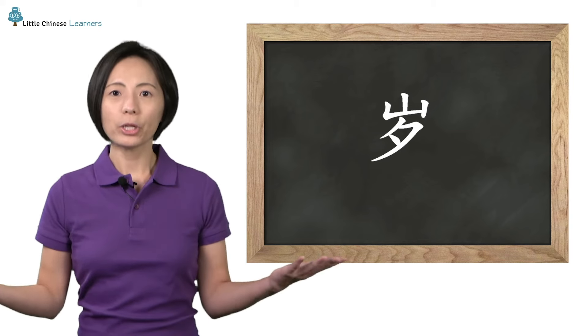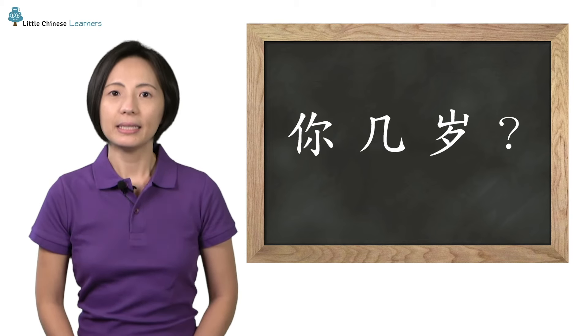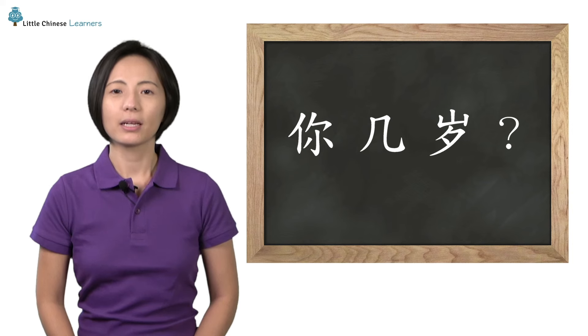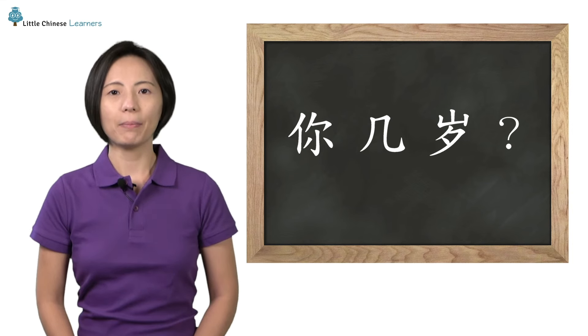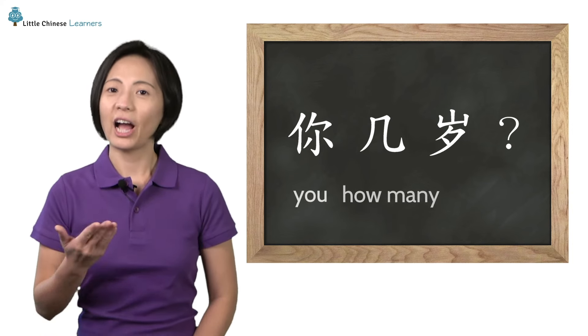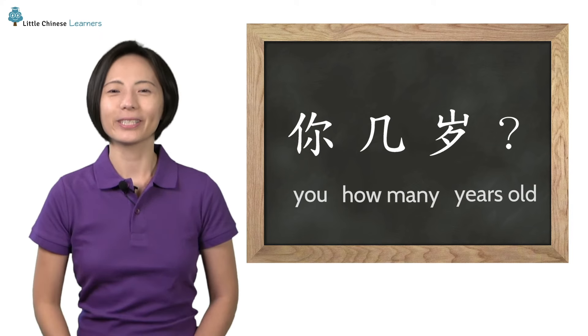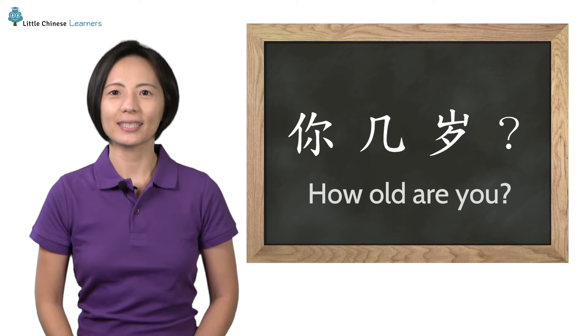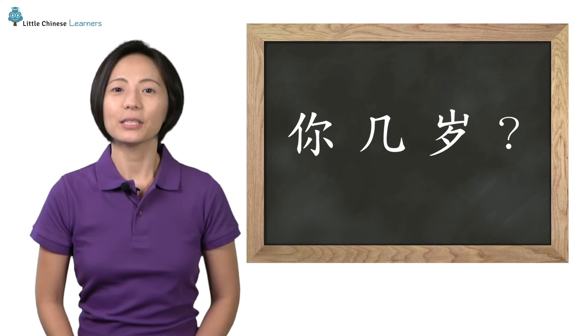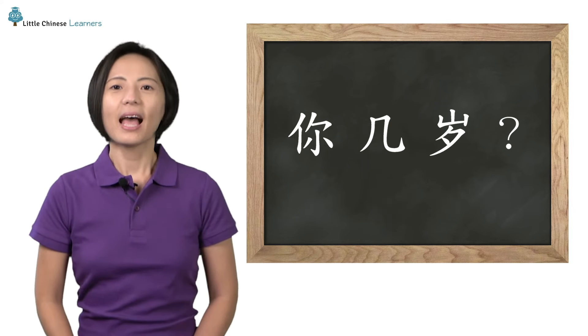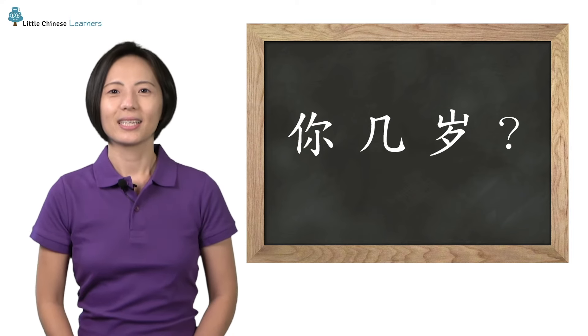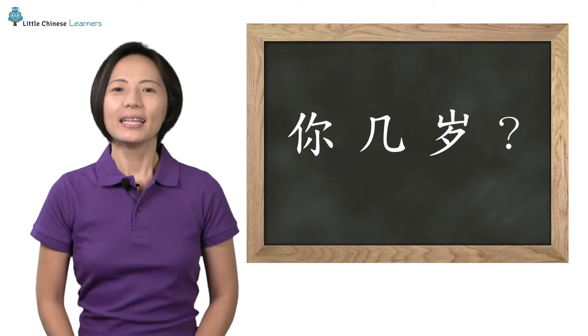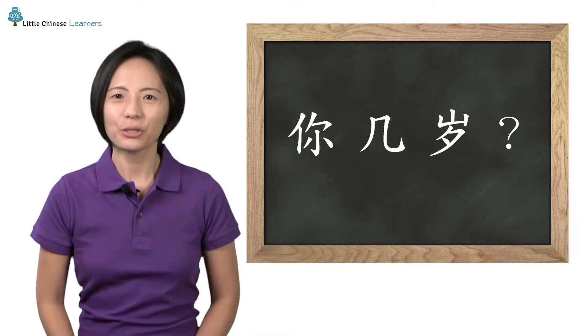When we put all of them together, we get 你几岁. Word for word, that means you, how many, years old. That's how we ask for someone's age in Chinese. 你几岁? Let's say it together. Perfect!